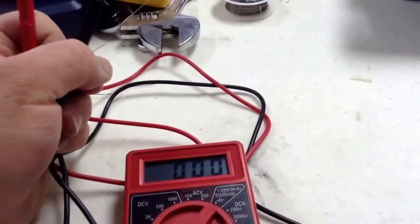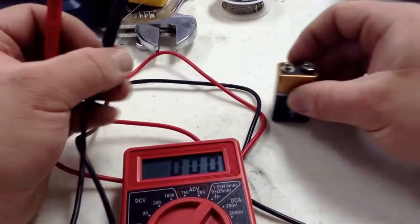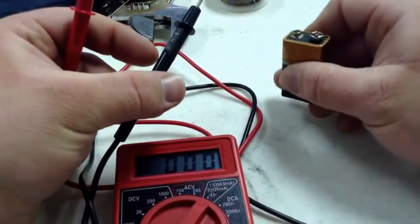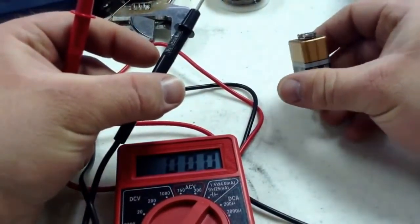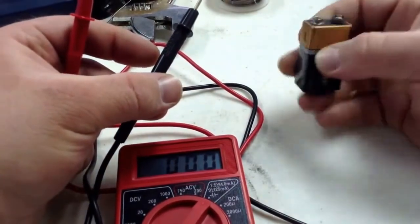So if we set this down, we have our 9V battery here. Make sure that on the battery you're putting it on the right lead, this being the negative and the labeled side being the positive.